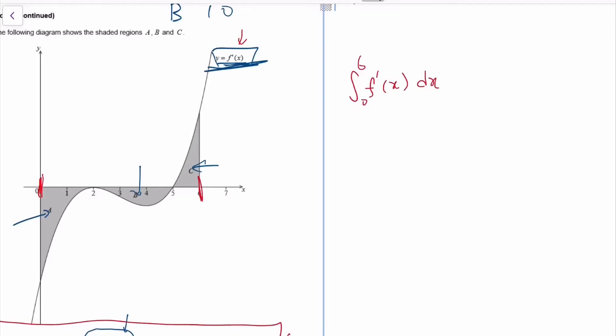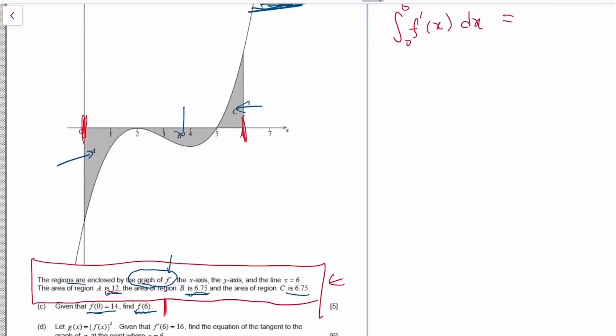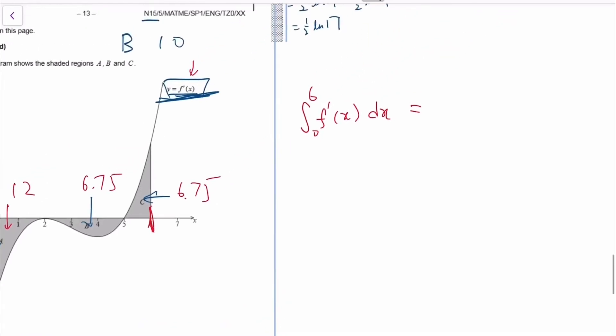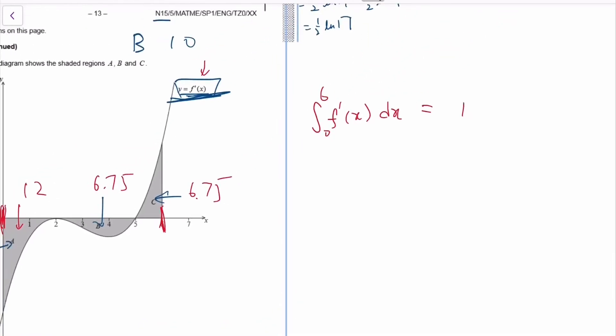Now what kind of answer should I get if I do that? If I integrate this curve from 0 to 6, I'm supposed to find the area between 0 to 6, right? What are the areas? It's 12, 6.75, 6.75. So I would get maybe what, 12 plus 6.75 plus 6.75, right? Just the area. Would that be what I get?